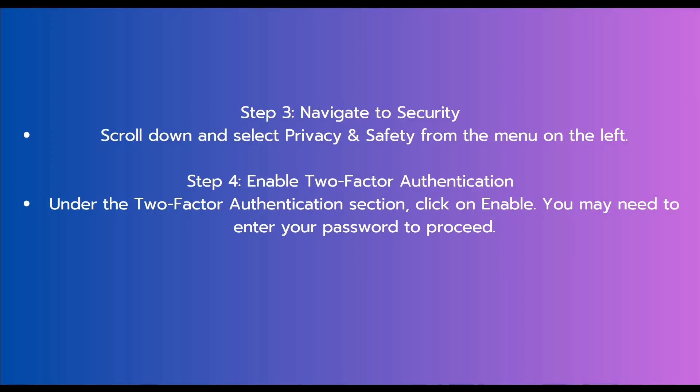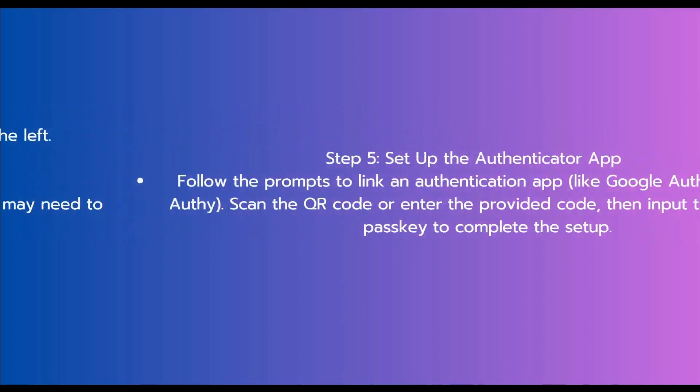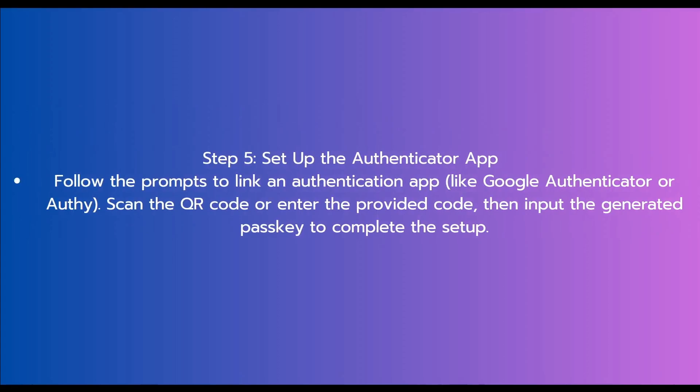You may need to enter your password to proceed. The fifth and final step is to set up the authenticator app. Follow the prompts to link an authenticator app like Google Authenticator or Authy, scan the QR code or enter the provided code, and input the generated passkey to complete the setup.